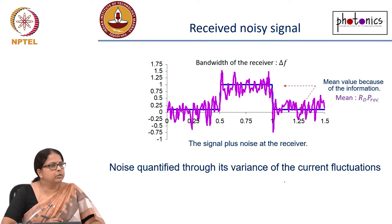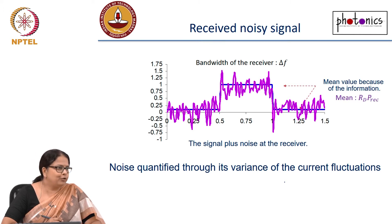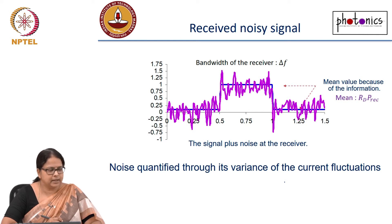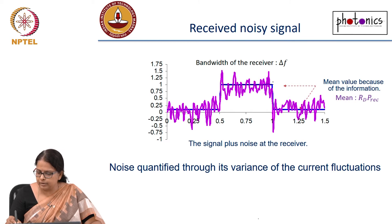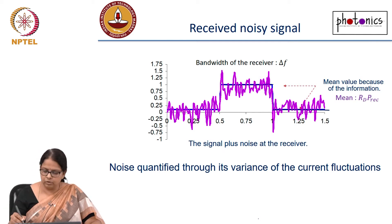This is how your received signal is going to look like. The blue shows the ideal on-off digital signal. On top of that you have this pink, which is fluctuations — so this is signal plus noise. The mean here corresponds to the information that you have. This is your 1 and 0. But around that, you are not seeing the ideal signal; what you are seeing is only the pink.